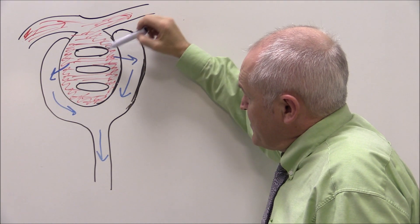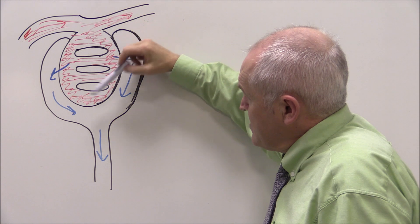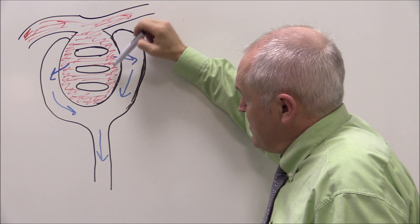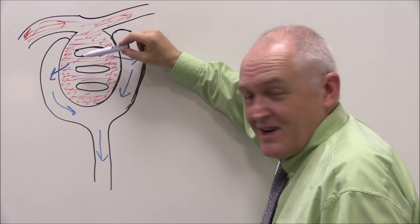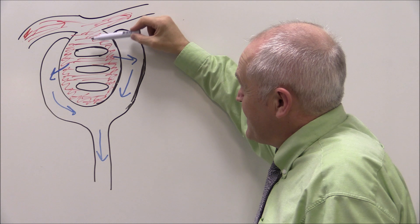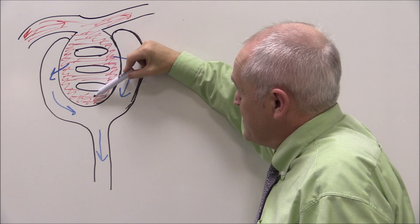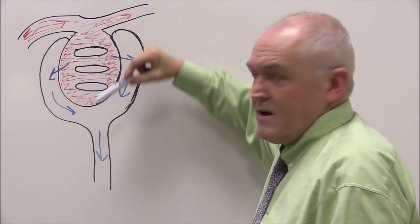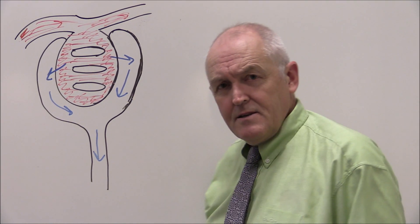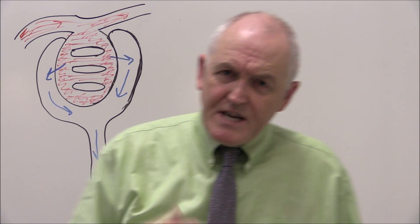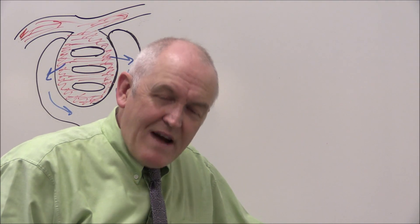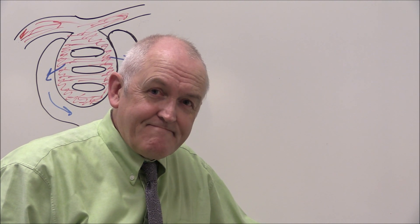Now of course the real glomerulus looks a lot more complicated than my simplified diagram, but you can see here that we've got the individual capillaries of the glomerulus. So let's think about the arrangement of the podocytes around about the glomerular capillary.